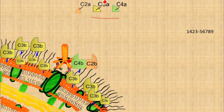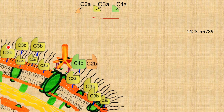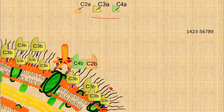To summarize option one of the classical pathway: the C3 convertase complex breaks many C3 molecules, and the C3b subunits accumulate on the bacterial surface, attracting macrophages and other phagocytes that engulf the bacterial pathogen — a process called opsonization. The other option, which will be discussed next, involves creating a hole or pore within the body of the bacterial cell.